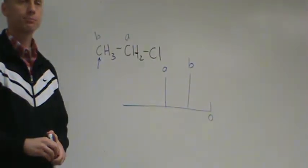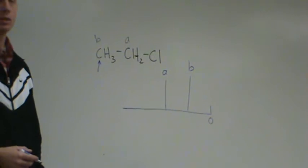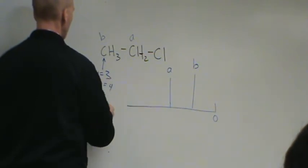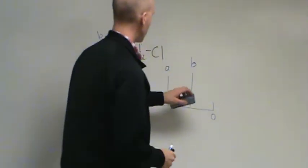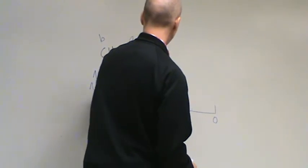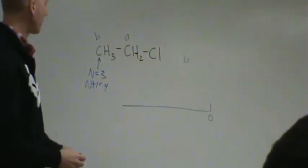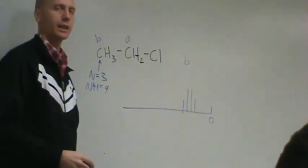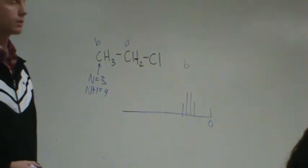By way of review, the B signal would be more upfield than the A signal. So that was the proton-decoupled. Now let's look at proton-coupled. Focus in on this CH3 here. That carbon, how many hydrogens are on that carbon? There's three. So N is three, so N plus one equals four.